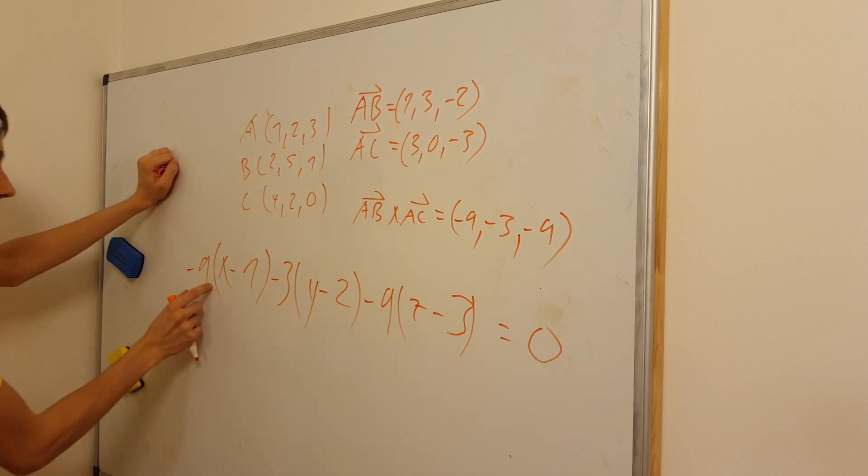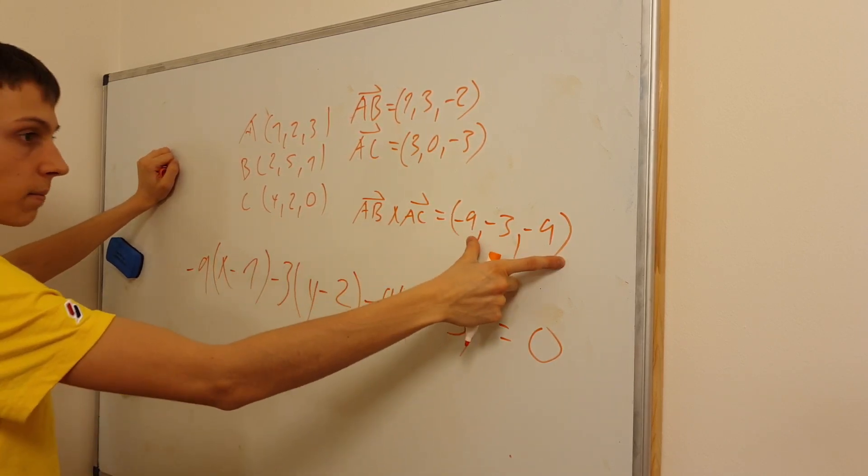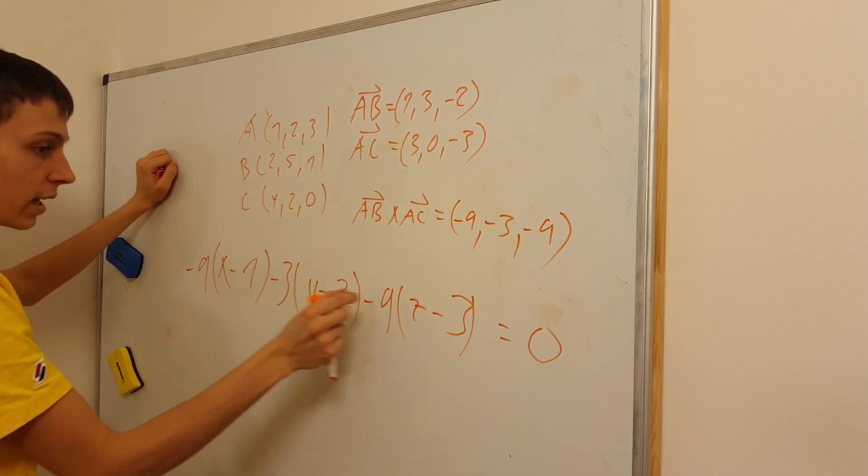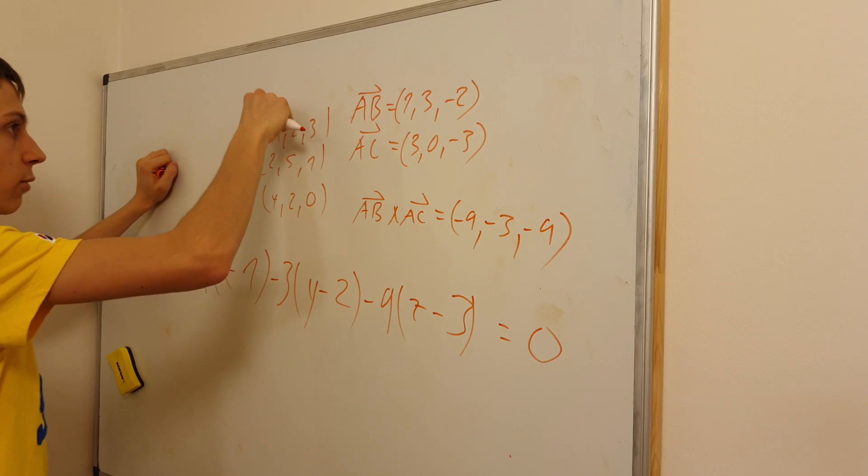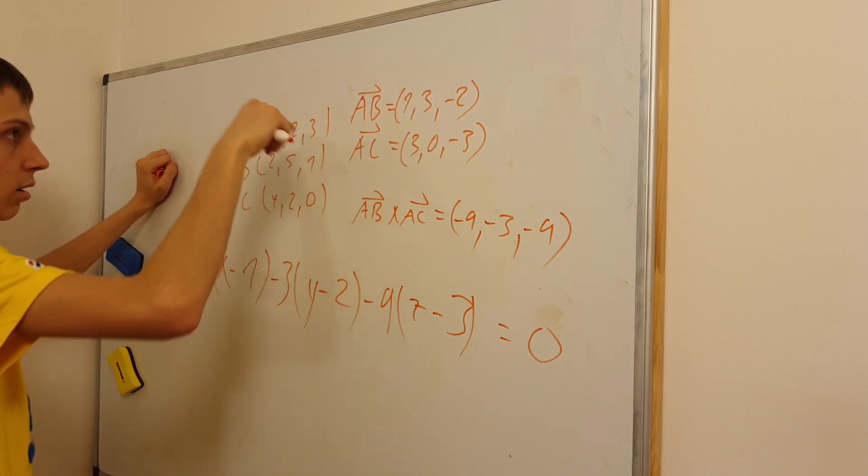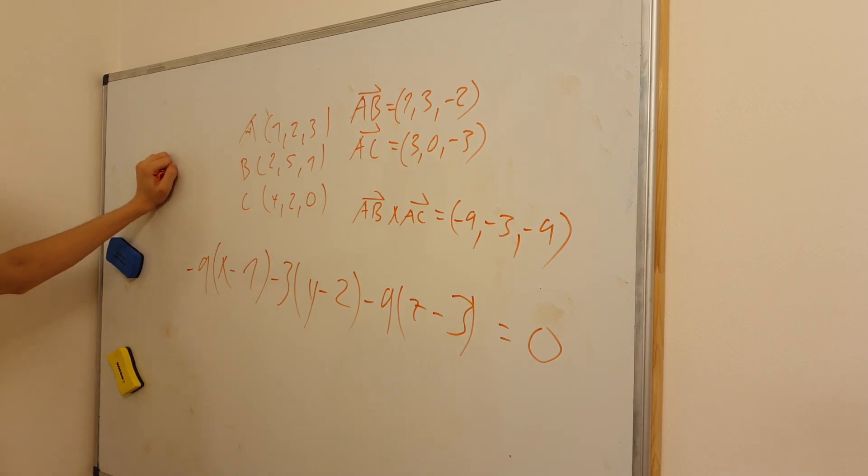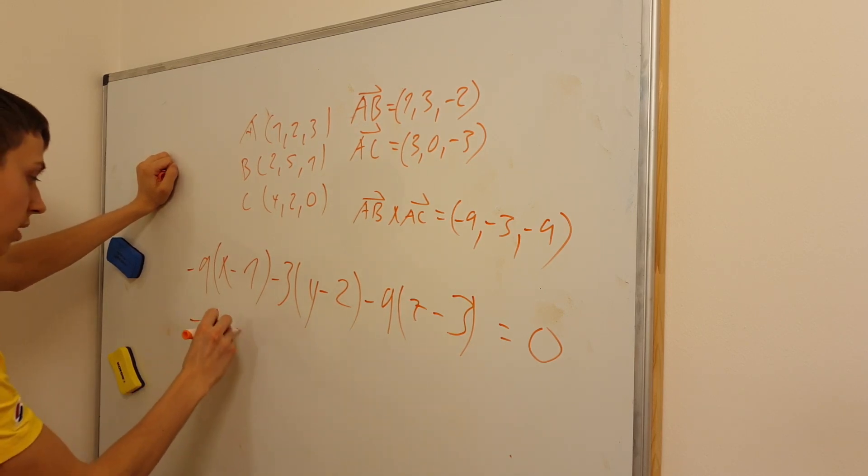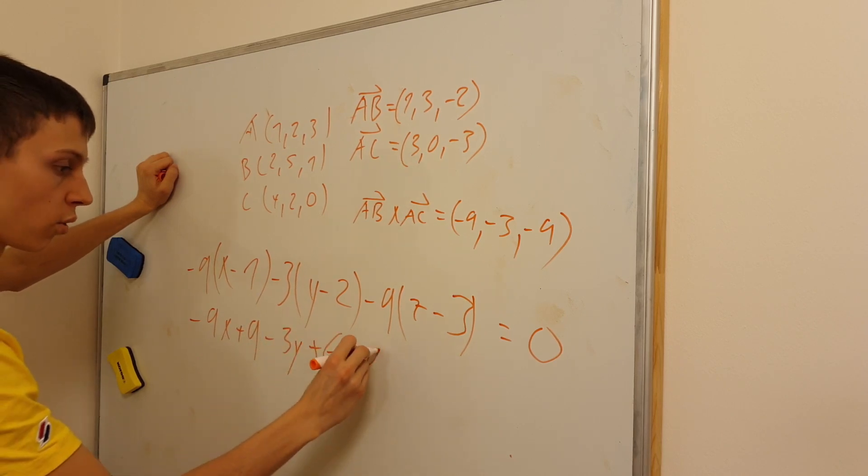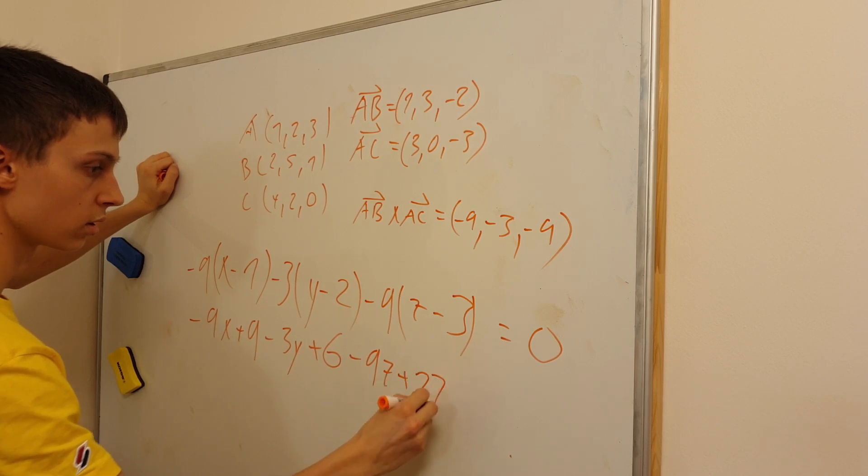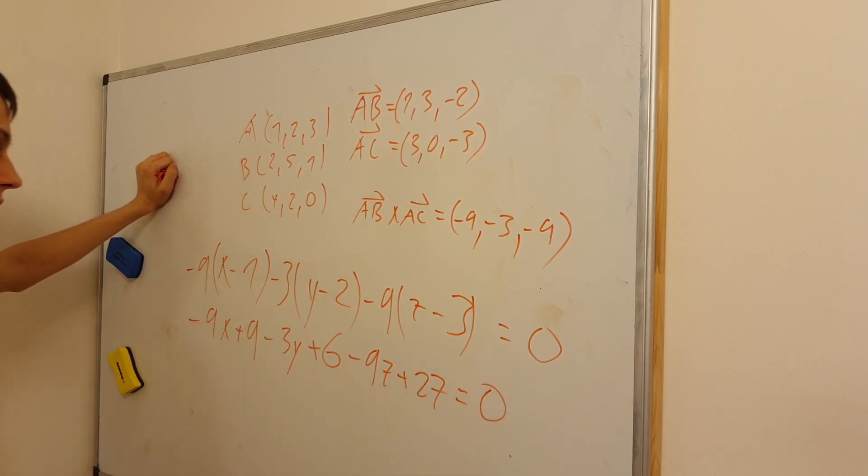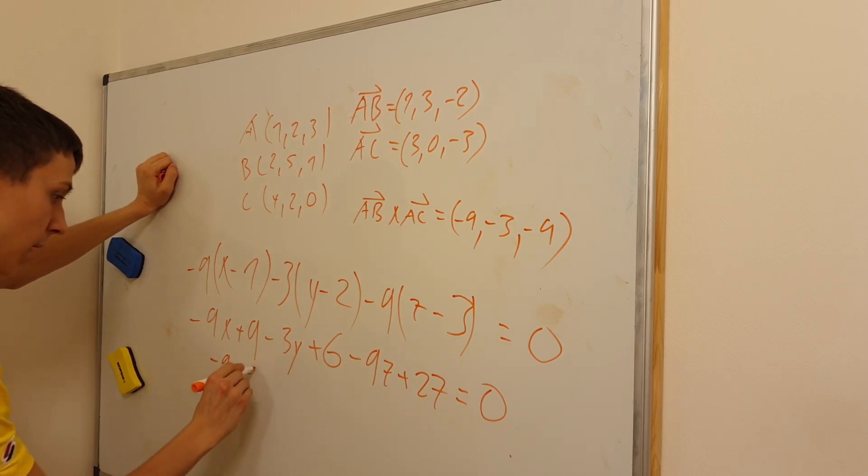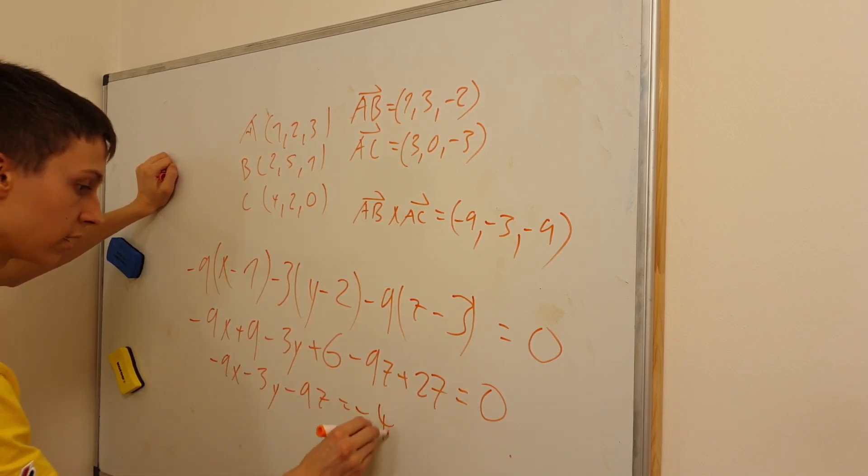Now I'll just solve this equation. These three things were parts of the normal vector, and these three things are just x, y, and z, minus always the three parameters x, y, and z respectively of the point through which it goes. We'll just get a result for this and push all the constants to the right side: minus 9x plus 9, minus 3y plus 6, minus 9z plus 27. So we have minus 9x, minus 3y, minus 9z equals 15 plus 27, minus 42.